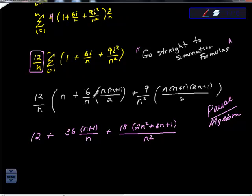We know this 6 over n is this 6 over n right here, but we know that the summation formula for i is n times the quantity n plus 1 over 2, and hopefully you're well aware of those things.